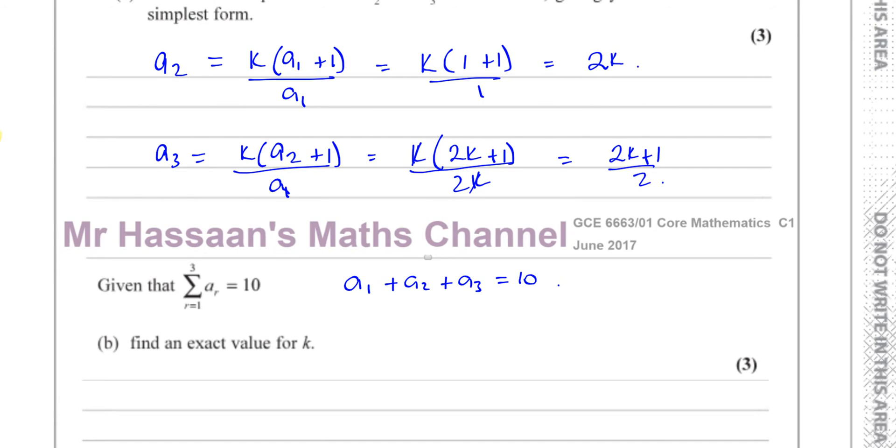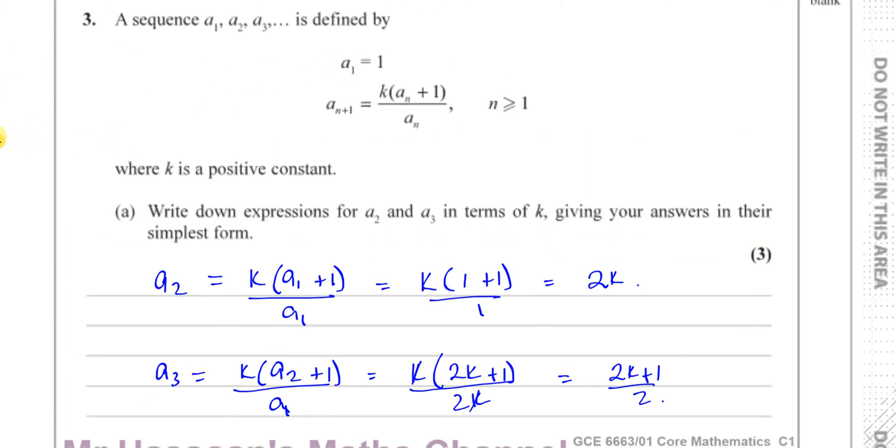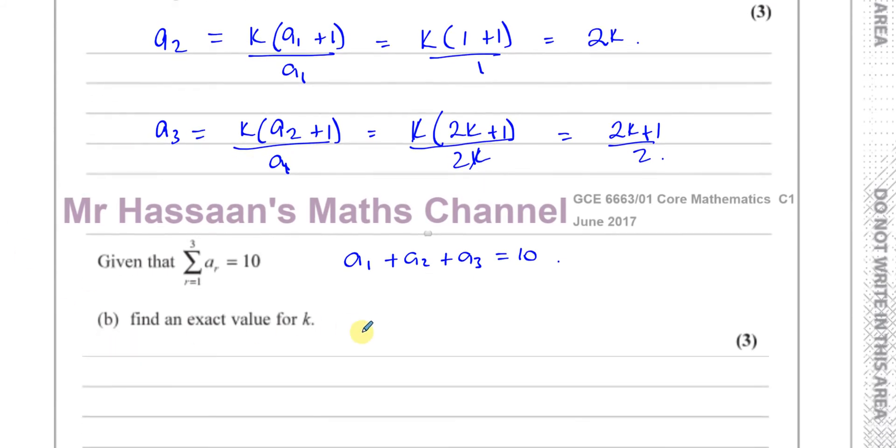The first three terms of the sequence we already have. We got a1 is equal to 1 as it told us here, and a2 is equal to 2k and a3 is equal to 2k plus 1 over 2. So we know a1 is equal to 1.